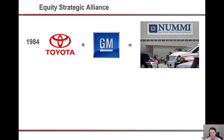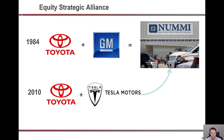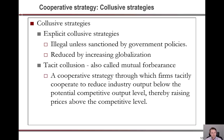An equity strategic alliance example is Toyota and GM coming together to create New United Motor Manufacturing Inc. (NUMMI) in 1984. Later in 2010, Toyota brought Tesla Motors in to work on battery technology together for their upcoming hybrid vehicles.